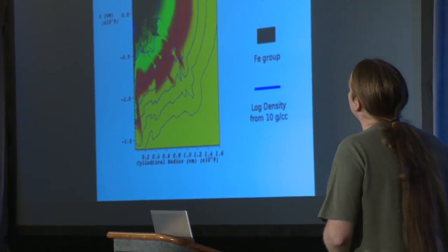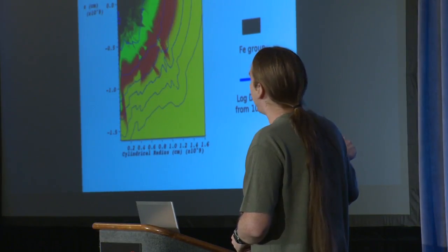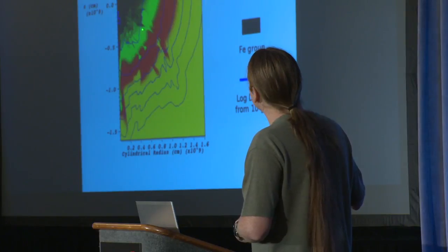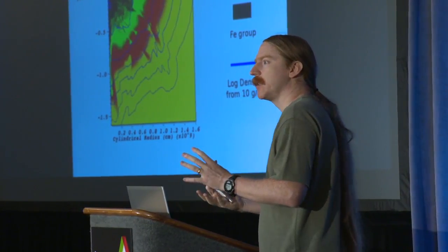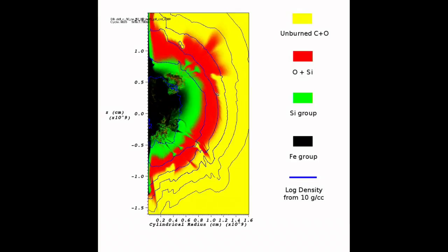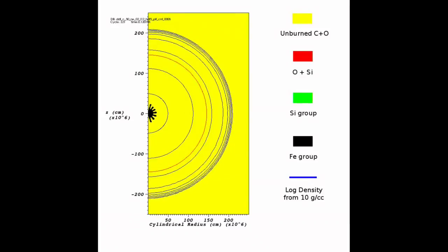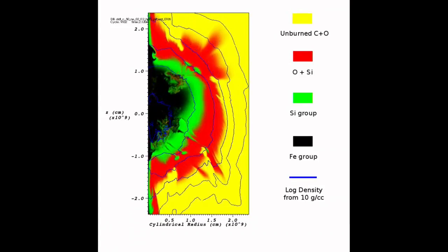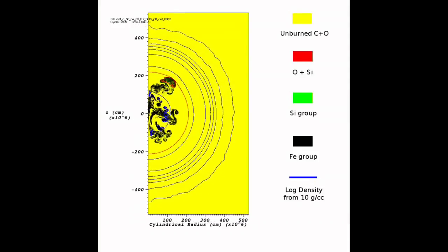This is what we see when this kind of supernova explodes in the sky. We can see different layers as light propagates out through the ejected material: unburned carbon and oxygen on the outside, a layer of oxygen and silicon, followed by mostly silicon group material, and in the most interior, iron group material. We actually see this layered structure from the spectrum of observed supernovae, and we're trying to reproduce that structure with our simulation. The entire star is destroyed in about a second and a half.